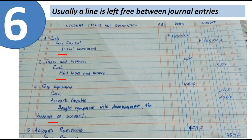Usually a line is left free between journal entries. After one complete journal entry, leave one space before the next entry. Always remember: after each journal entry, leave one blank line or space.